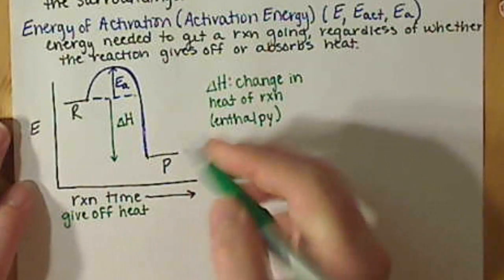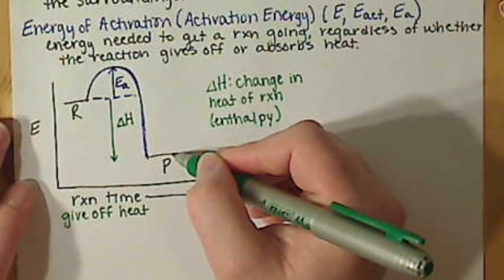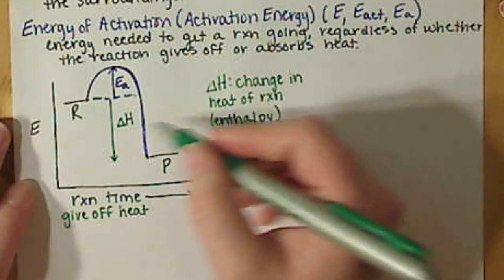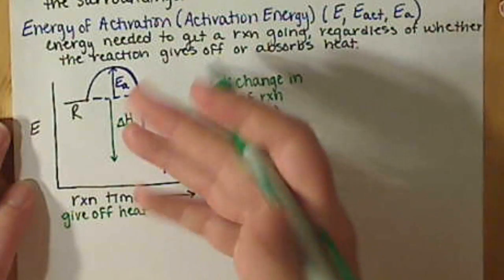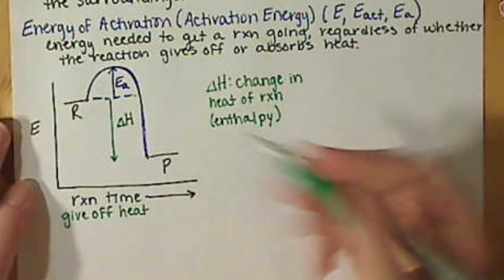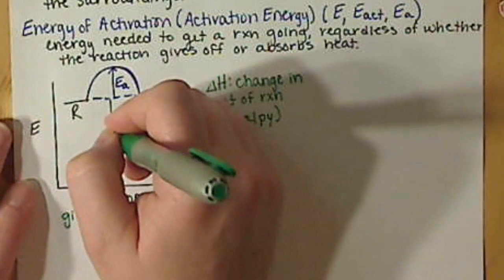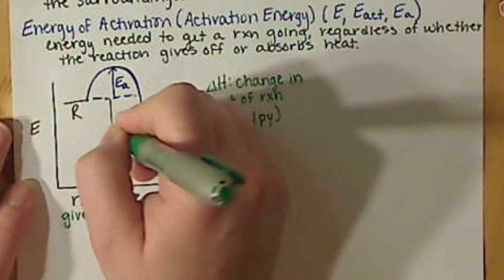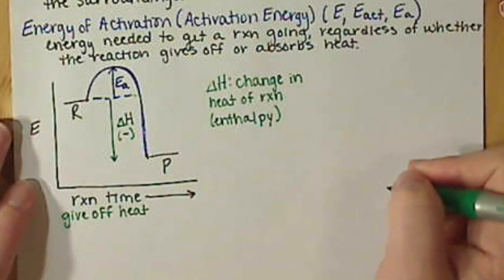Overall, this reaction is going to give off heat. The reactants are higher than the products in energy. Energy has to be conserved, so this energy difference is going to come off the reaction. So our delta H value, when we're looking at this, is going to be negative.